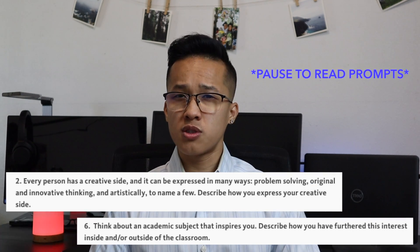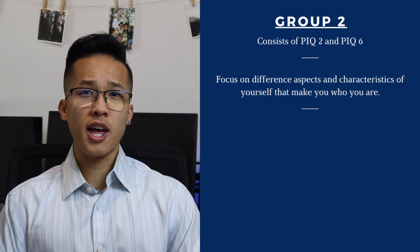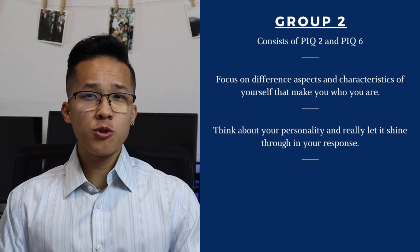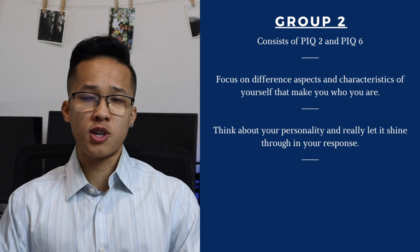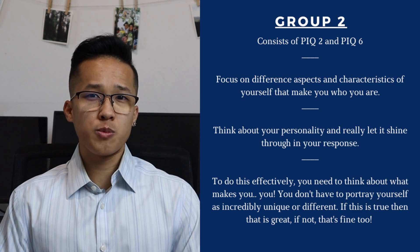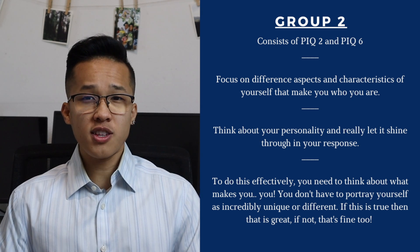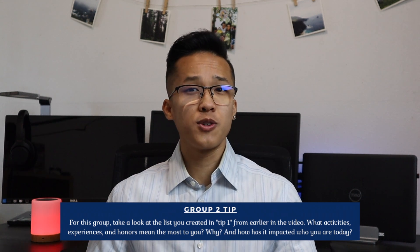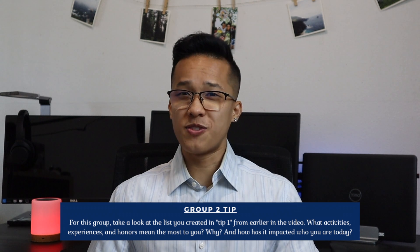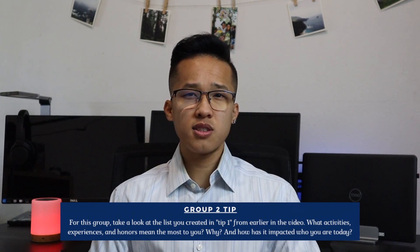The second group includes PIQ number two and PIQ number six. For this group, you really want to focus on aspects of you that make you who you are. I really advise you to let your personality shine through. Students often get into the trap of wanting to be as unique or as different as possible, but a lot of the times you really just need to focus on who you are. This is where the list of activities, awards, and honors that you created earlier is going to come in handy as well. You want to choose a couple different things from that list and talk about why you pursued it, how it's impacted you, and what role they play in who you are today.